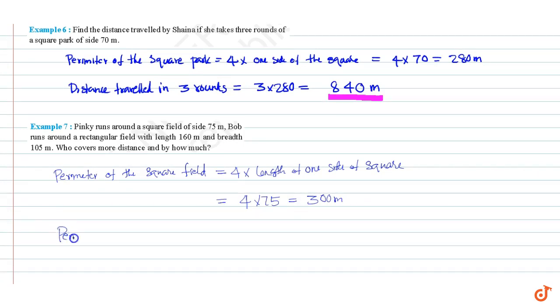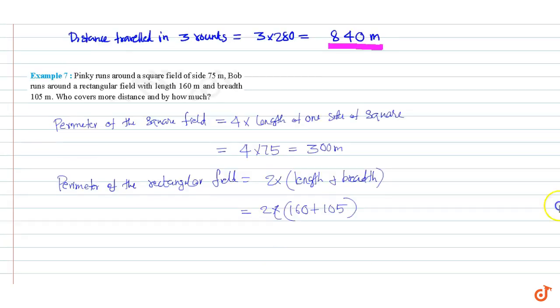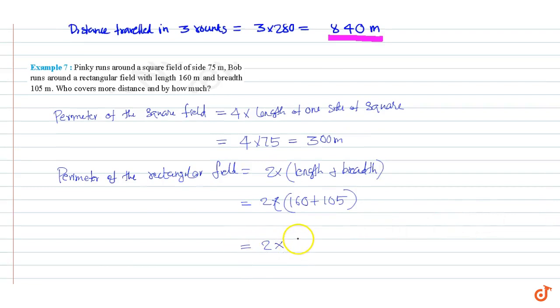Perimeter of the rectangular field equals 2 times (length plus breadth), which is 2 times (160 plus 105). This is equal to 2 times 265, which equals 530 meters. Therefore Bob covers more distance.